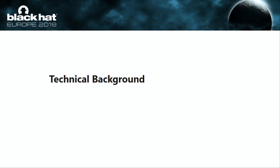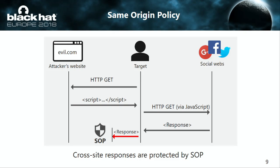I will provide the technical background of two fundamental building blocks of our attack. The first is the same-origin policy, one of the most important mechanisms for web browser security. In this figure, the target accesses evl.com and downloads JavaScript code. That code forces the target to request another page of the web service — this is a cross-site request, CSRF. Although the request is actually made, the owner of evl.com cannot acquire the response due to the same-origin policy.